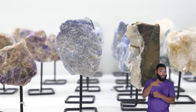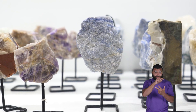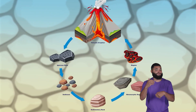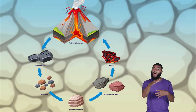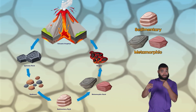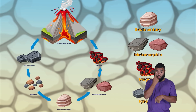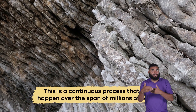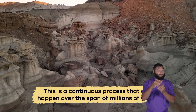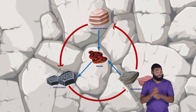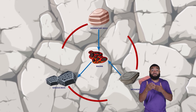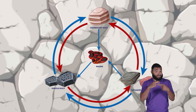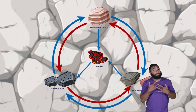Even though each rock type is different, they all go through a process called the rock cycle. Simply put, the rock cycle is the process by which one type of rock changes into another type of rock. This is a continuous process that can happen over the span of millions of years. Even though there are specific steps in the rock cycle, the order can and does change, depending on the rock.